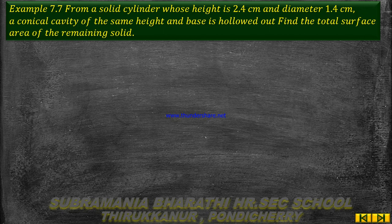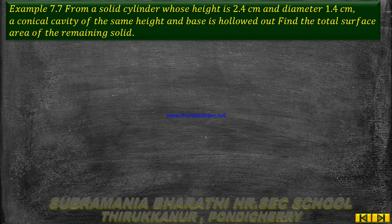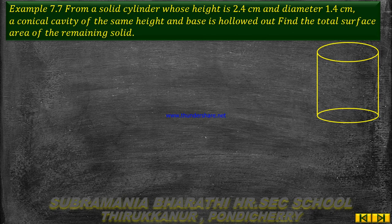Find the total surface area of the remaining solid. This is a cylindrical shape with a conical cavity. The height and diameter are given and we are ready to solve.